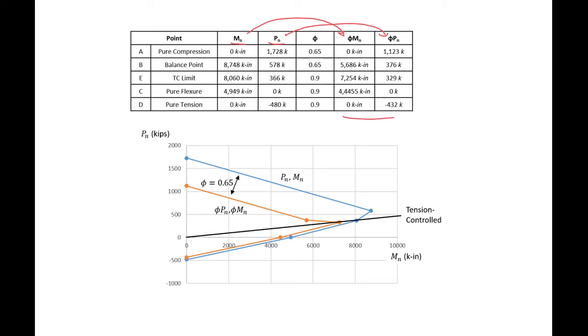You can see that on our compression side we're shifting our diagram by 0.65, so you see a larger difference between our factored and unfactored diagrams. And then on the tension side we have less of a change because we're only shifting by a phi of 0.9 here.